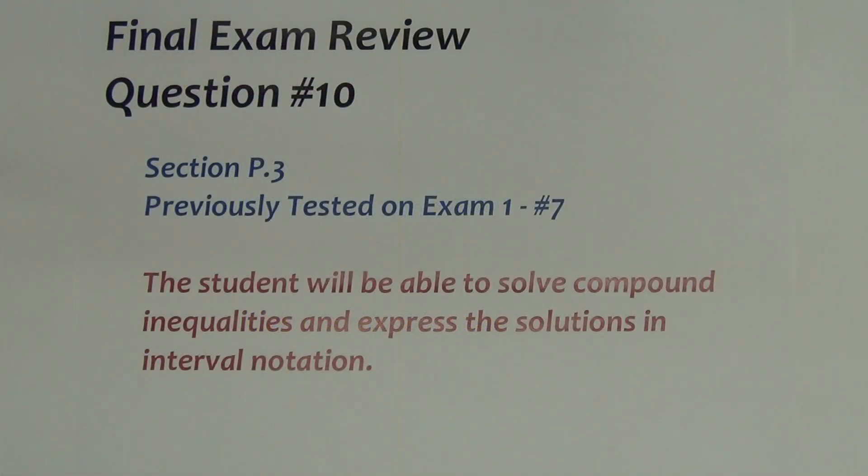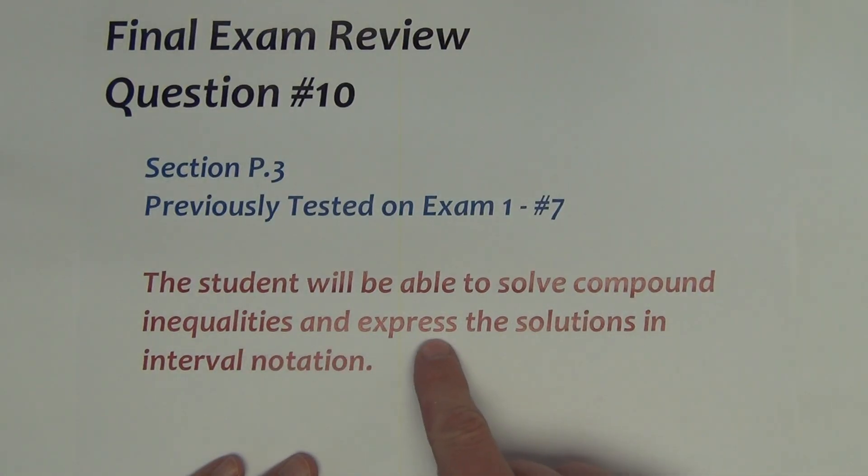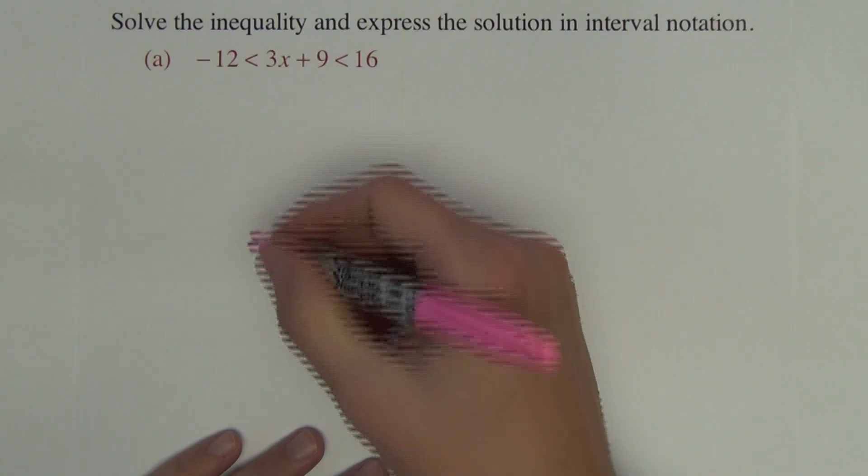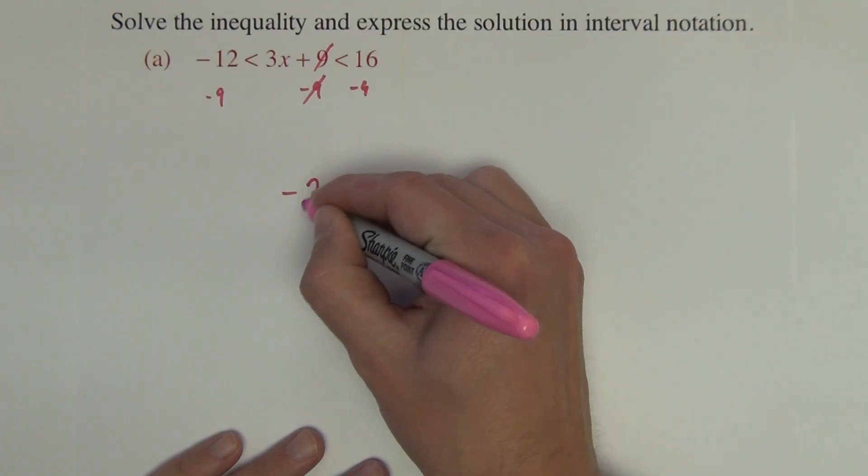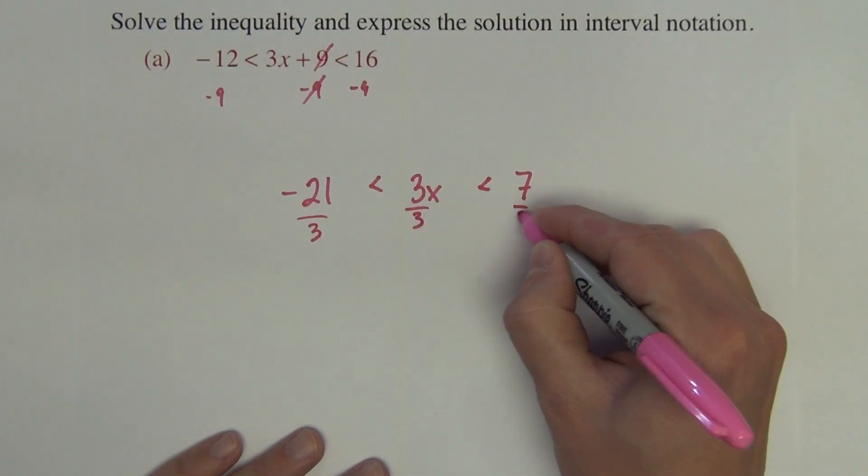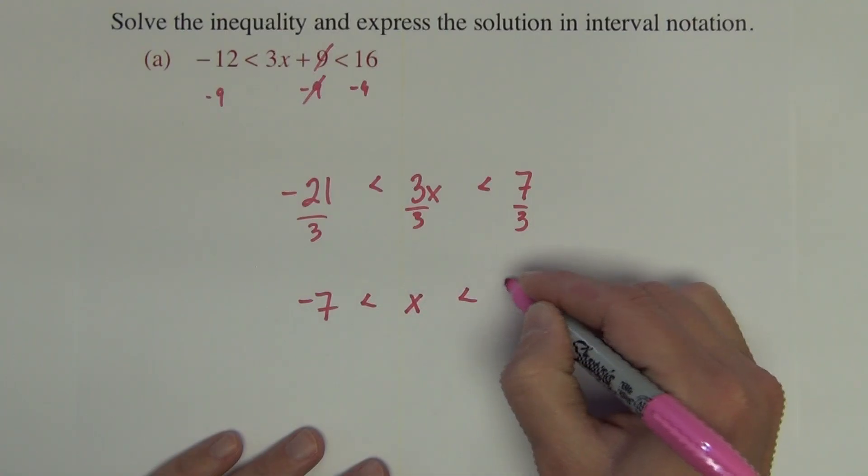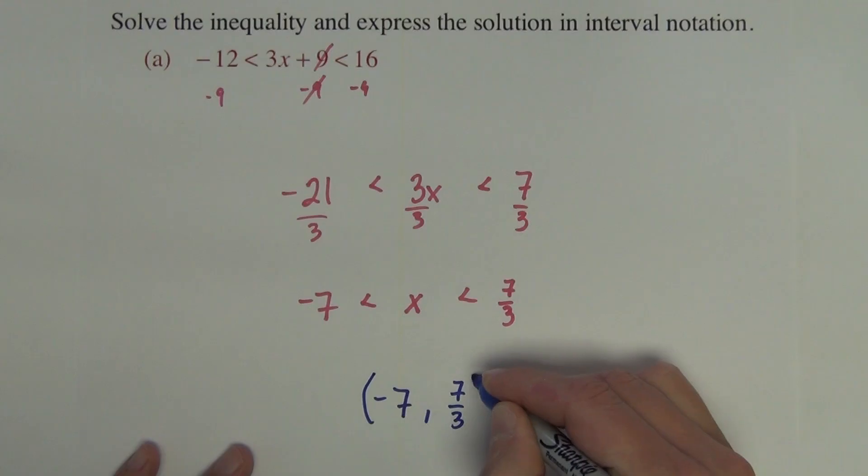Question 10 on the final exam comes from section P.3 was previously tested on exam 1, question number 7. And on this question, we are testing whether you can solve compound inequalities and express solutions in interval notation. So first question, solve the inequality and express the solution in interval notation. I begin by minusing 9 from both ends. So we get negative 21 is less than 3x is less than 7. Divide by 3. We get negative 7 is less than x is less than 7 thirds. So we want all x values that are between negative 7 and 7 thirds. So it's rounded parentheses because we are not equal to on the inequalities.